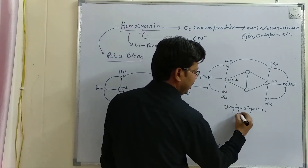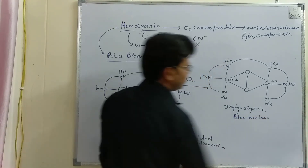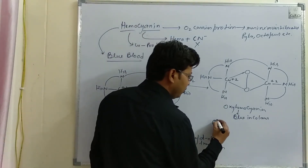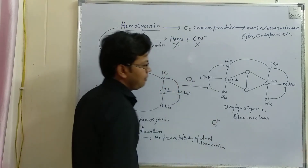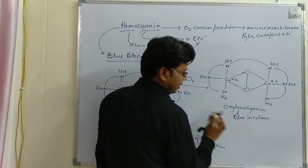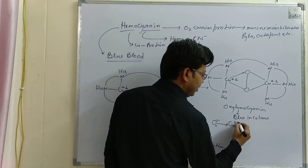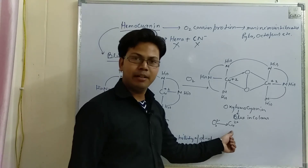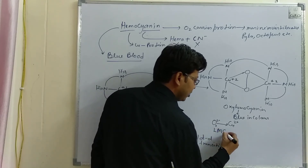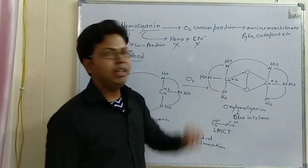This oxy form of hemocyanin is blue in color, because the O2 molecule is in the form of a peroxide ion. This peroxide ion donates its electrons to the vacant 3d orbitals of the copper atom. Due to this ligand-to-metal charge transfer (LMCT) transition, the oxyhemocyanin becomes blue in color.